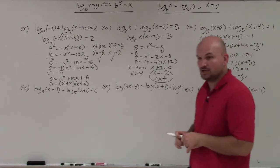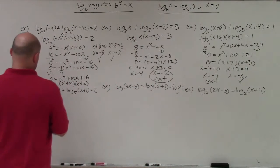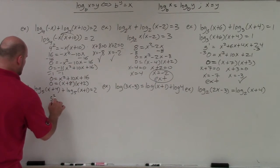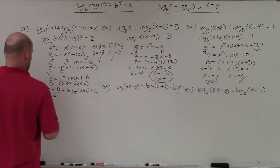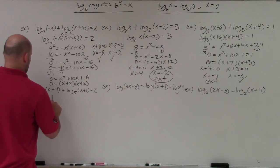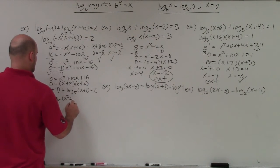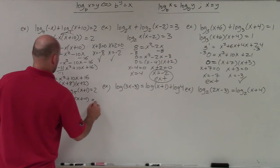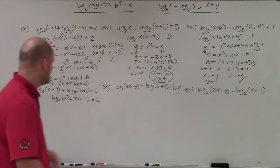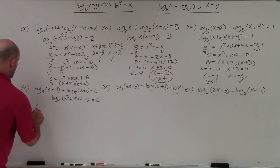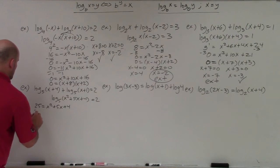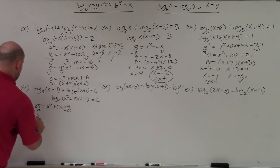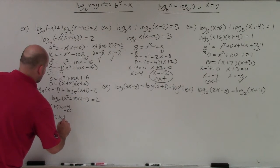The next example will take a bit more work. I have 5 squared equal to the product of the two binomials, which multiplies out to x squared plus 5x plus 4. So 25 equals x squared plus 5x plus 4. Subtracting 25 on both sides gives 0 equals x squared plus 5x minus 21.